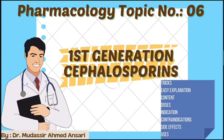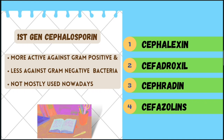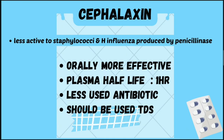Today we'll see about first-generation cephalosporins. As we already know, they are more active against gram-positive and less against gram-negative bacteria. They are not mostly used nowadays. First-generation cephalosporins are cephalexin, cefadroxil, cephradine, and cephazolin. We can remember them by the mnemonic: Lexi and Roxy stay in Zolin's house.